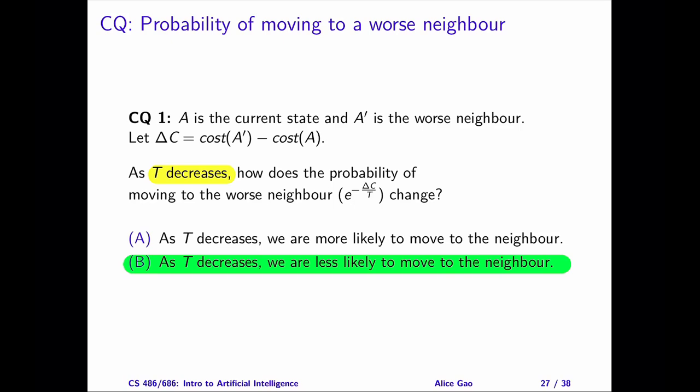The intuition for both answers is similar. Moving to a worse neighbor is a risky move. As the temperature decreases, we want to take fewer risks. Therefore, it makes sense to decrease the probability of moving to a worse neighbor.